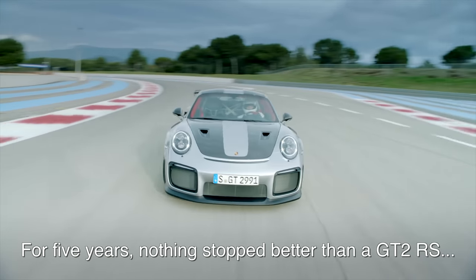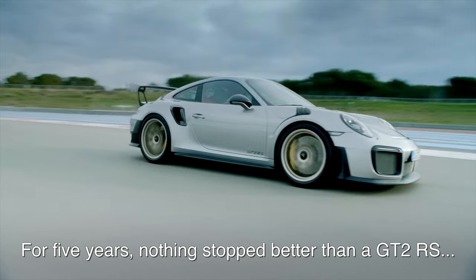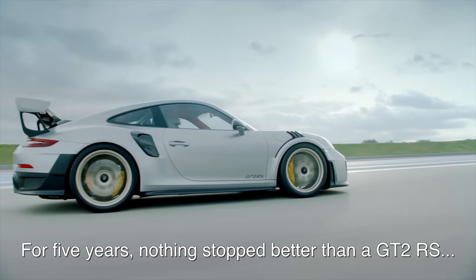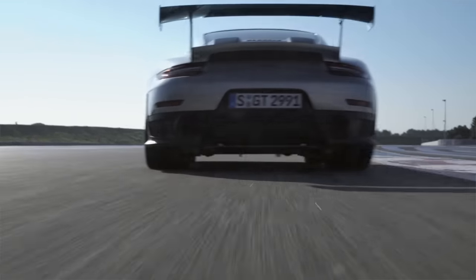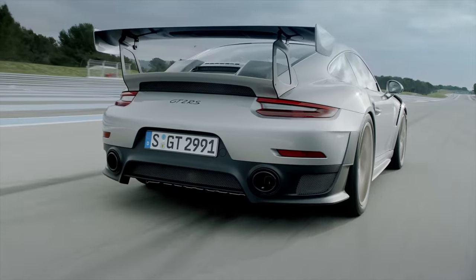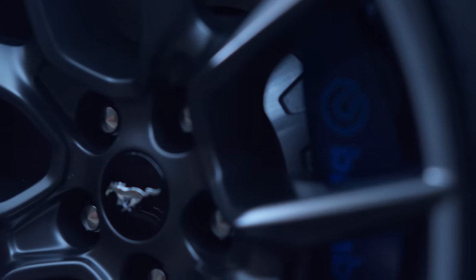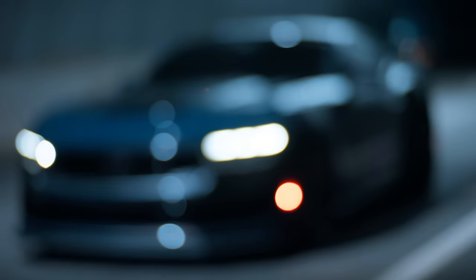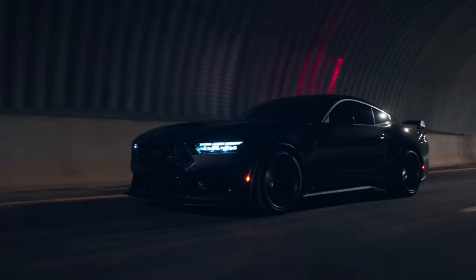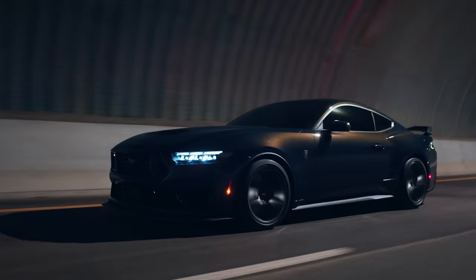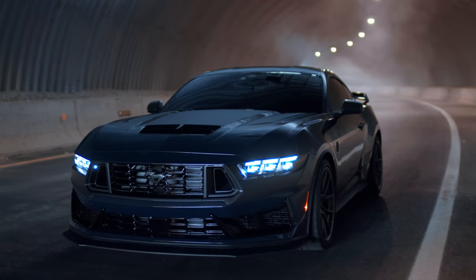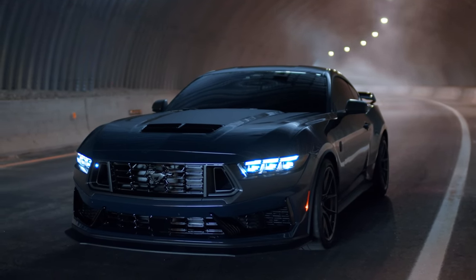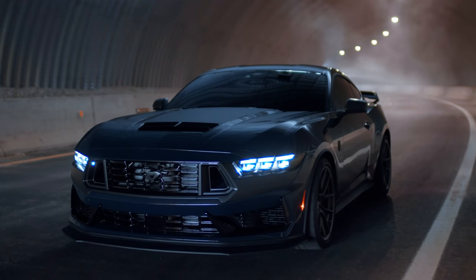For the past five years, no production car could stop quicker than a Porsche 911 GT2 RS, at least not in Motor Trend's extensive testing. Porsche reigned king for a long stint, but that no longer remains true. Hello everyone and welcome. In this video we're covering the impressive feat achieved by the Ford Mustang Dark Horse, the shortest stopping distance of any road legal production car in the history of Motor Trend's testing.